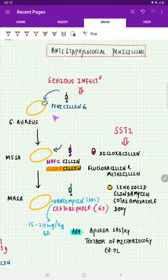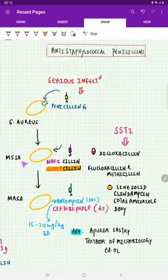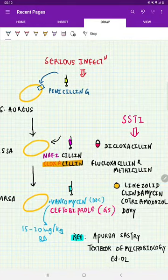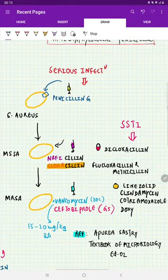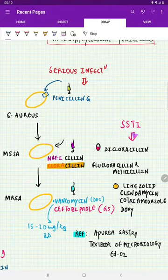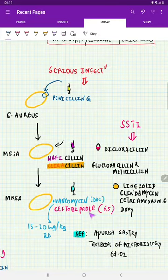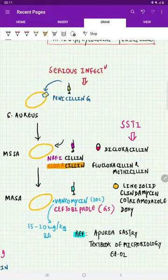For Staphylococcus aureus infection, the first preferred is penicillin G. If there is methicillin-sensitive Staphylococcus aureus (MSSA), the drugs we are going to give is Cloxacillin. For MSSA skin and soft tissue infection, we give Dicloxacillin and Flucloxacillin. For MRSA, the drug of choice is Vancomycin, 15 to 20 mg per kg BD. Other drug we can give is Ceftobiprole, which is a 5th generation Cephalosporin drug, and this is parenteral.